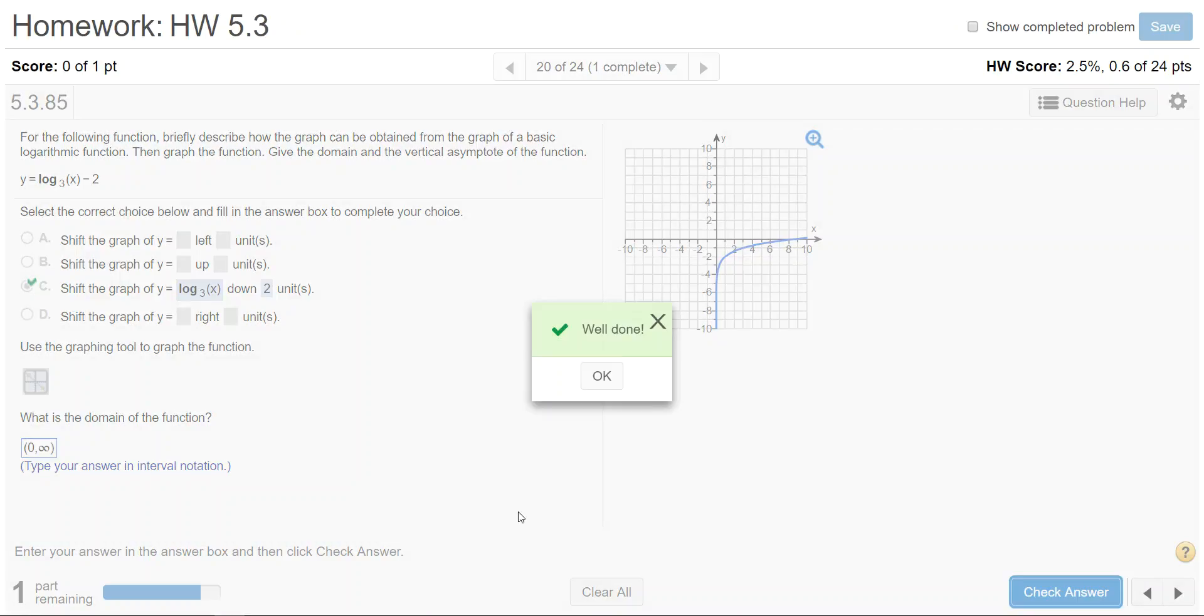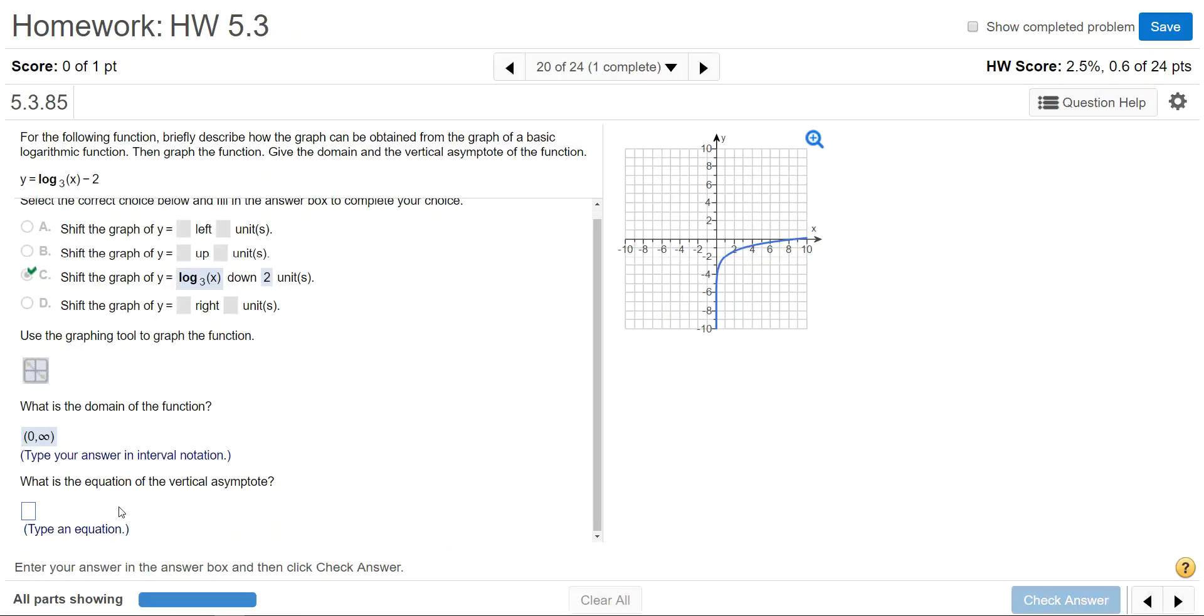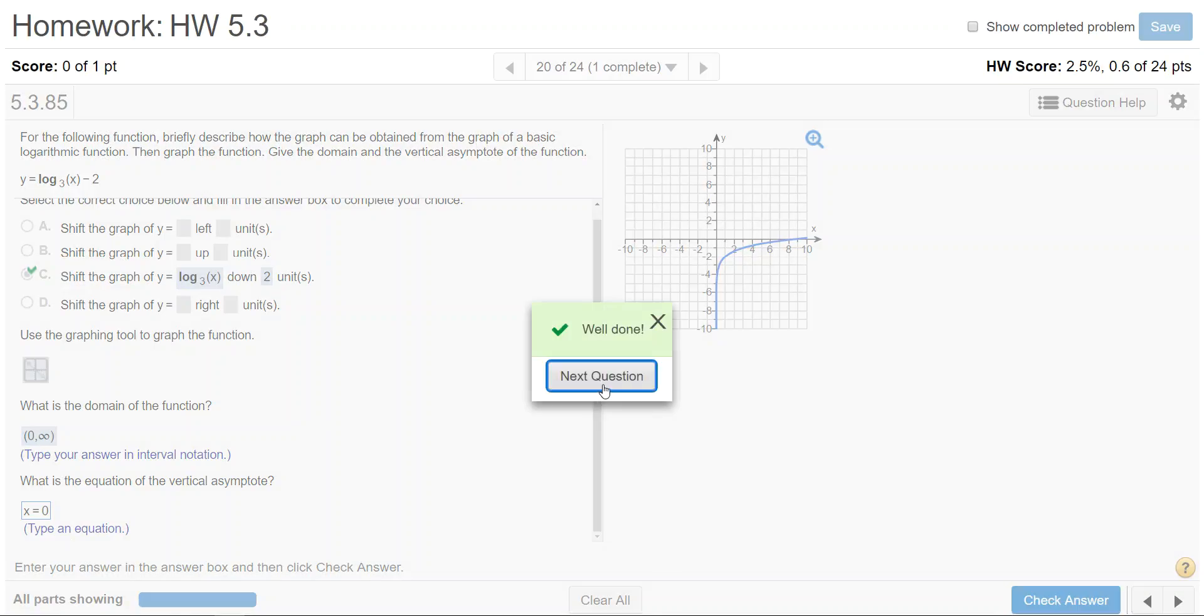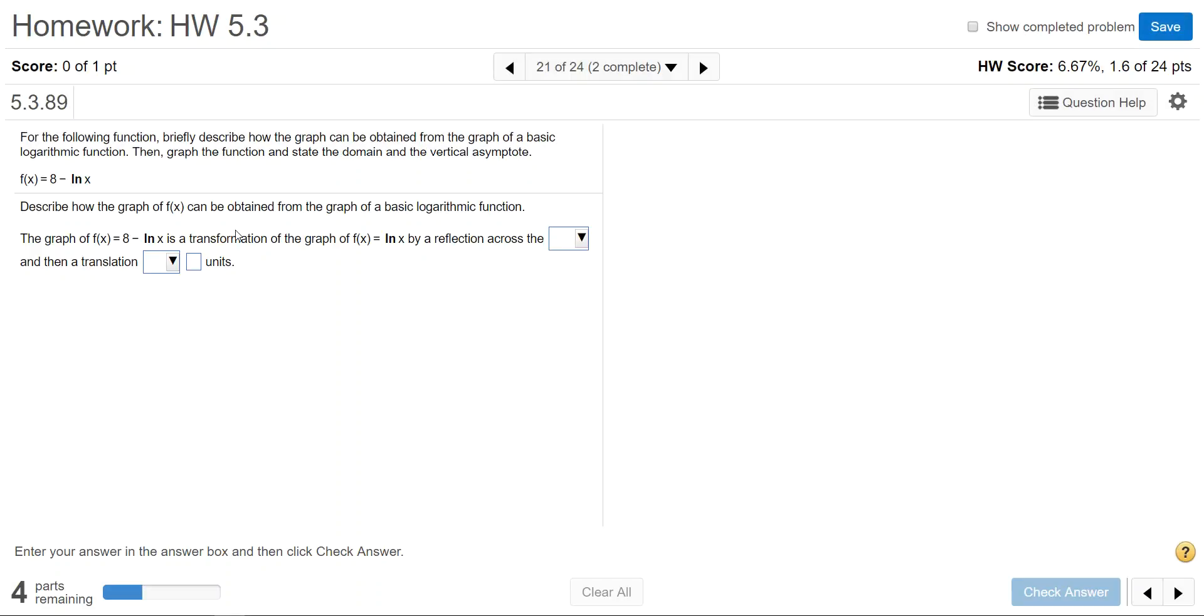Check that answer and then it asks for what is the equation of the vertical asymptote. You can't type just the number—you have to type the equation whether it be x equals or y equals. Since this is a vertical asymptote it's an x equals equation and it's positioned at x equals 0. Check that answer and then it asks us for the next part.